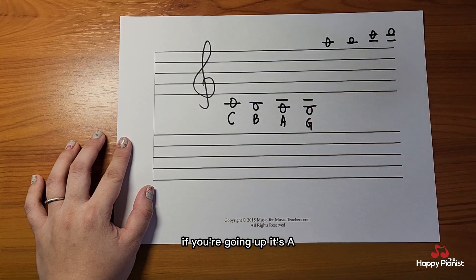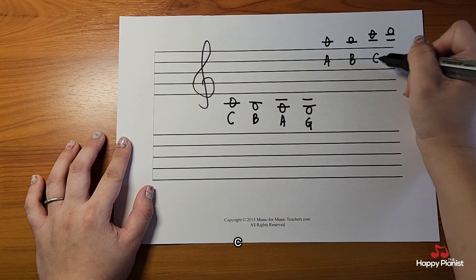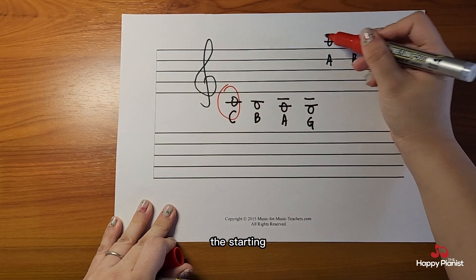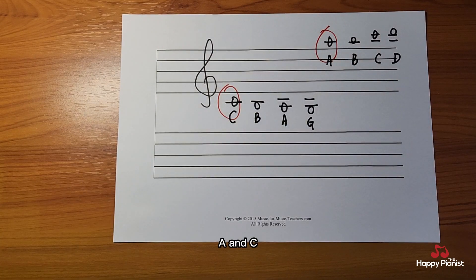If you're going up, it's A, B, C, D. All you need to do is to remember the starting, A and C.